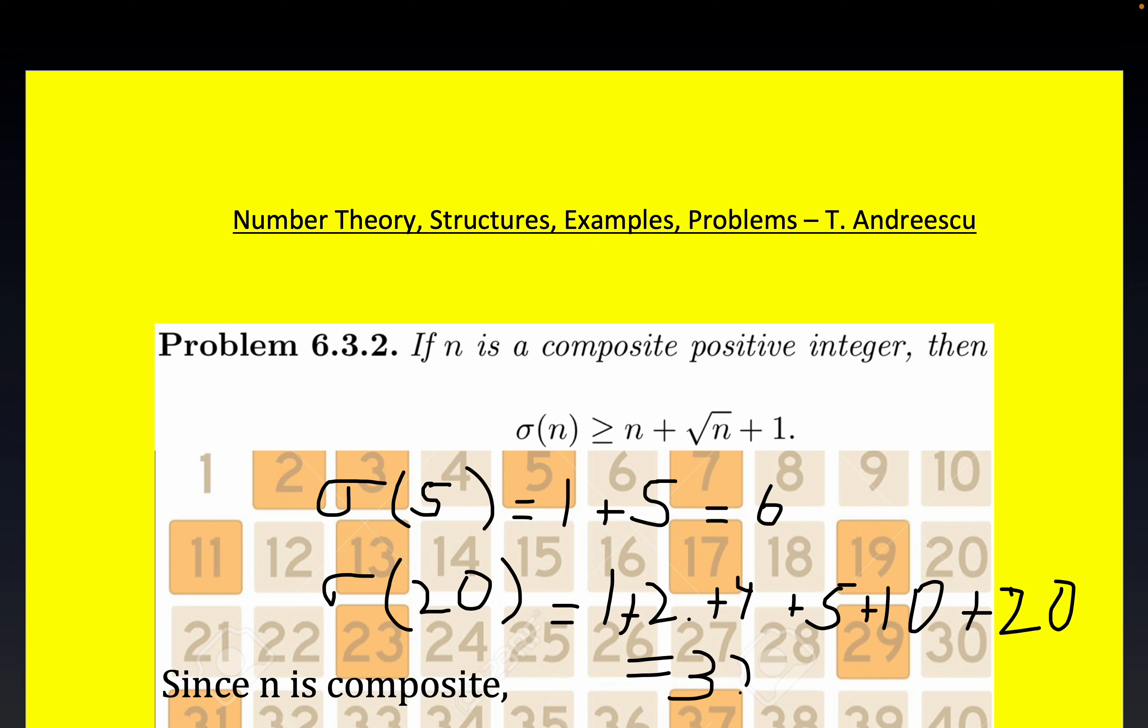Alright, now if you take a look what we're going to prove, it's a fairly straightforward proof, but it says the sum of the divisors of any composite, any composite number, any non-prime number is always going to be greater than or equal to n plus square root of n plus one.